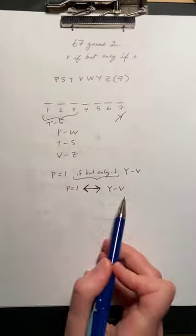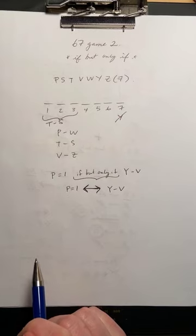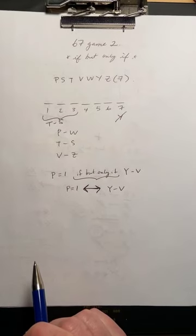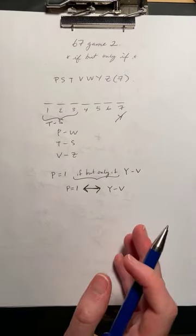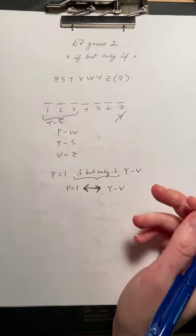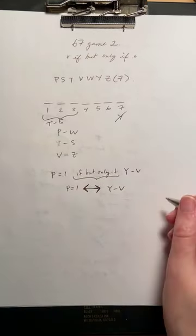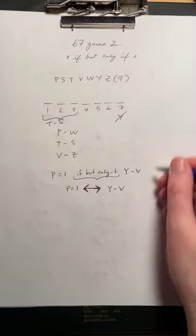So with the double-headed arrow, both of these are triggers. So typically with our conditional rules, we're really concerned about making sure that we know what the sufficient condition is, so that we treat that as the trigger.